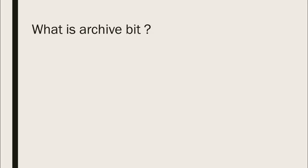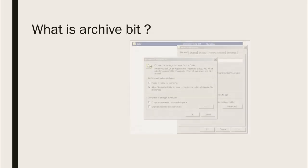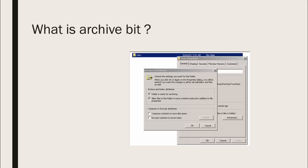The archive bit is mainly telling the backup process whether to take a backup or not. It's a property of a file. If you right-click and open properties, then from the General tab click on the Advanced tab, you can see the first option: 'Folder is ready for archiving.' If that box is ticked, it means the folder needs a backup. After a full backup, the backup process will clear the archive bit, meaning the backup is already done.